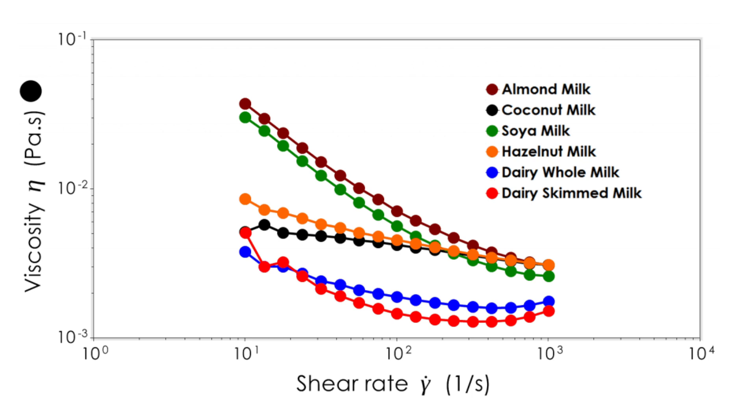In addition, both almond and soya milk show a higher degree of non-Newtonian shear thinning behavior, particularly at low shear rates. The differences identified could have a significant impact on the products themselves and how consumers interact with them.